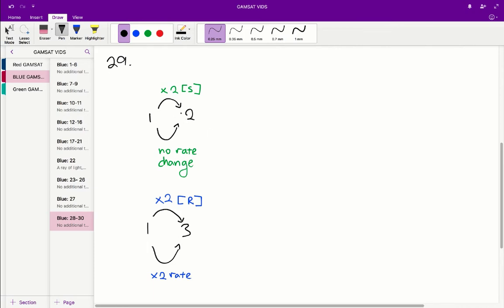So let's do that for experiment 1 and 2. So when you go from 1 to 2, you double the amount of S that you have and you also see that the rate does not change.